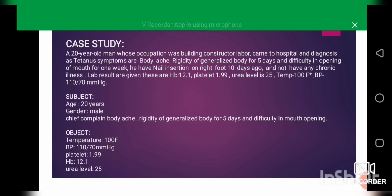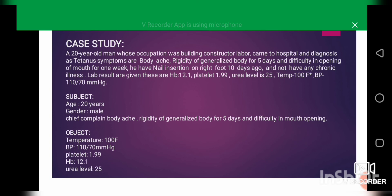His lab tests showed: hemoglobin level 12.1 g/dL, platelet count 1.99, and urea level 25. His temperature is 100°F and blood pressure is 110/70 mmHg. Chief complaint: generalized body rigidity for five days and difficulty in mouth opening.